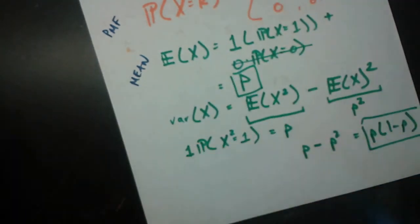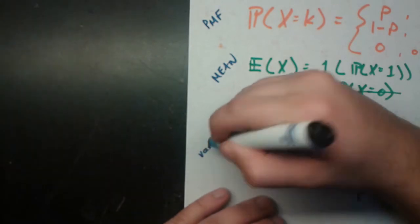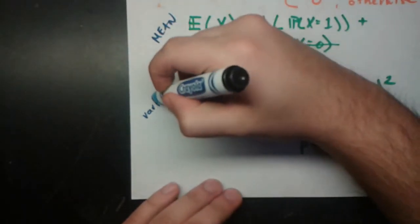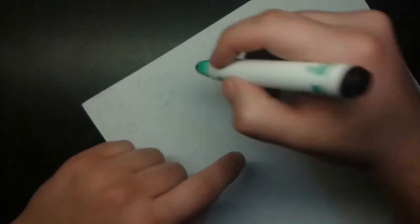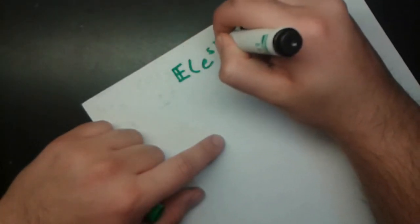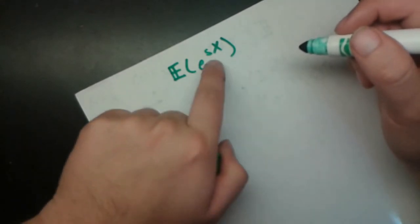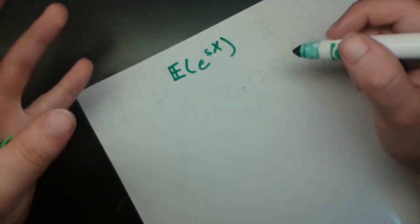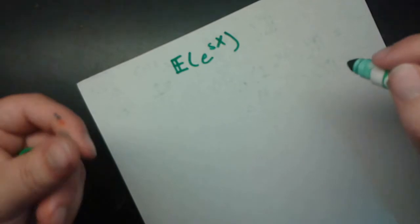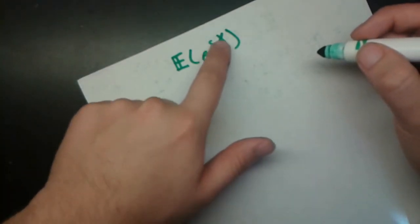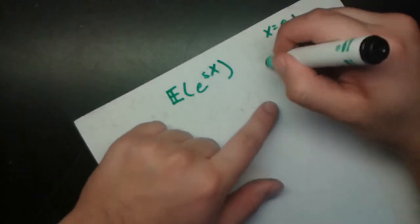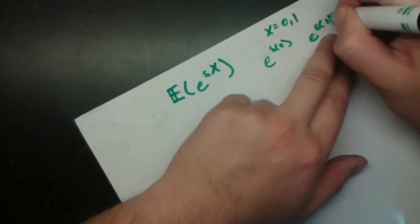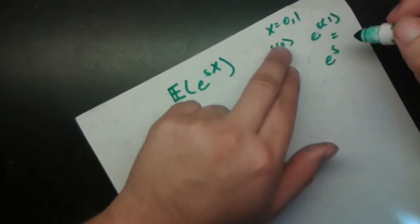So the variance of this Bernoulli random variable is p(1 minus p). Now the next thing we want to find is the moment generating function. The definition of the moment generating function is E[e^(sx)], where x is our Bernoulli random variable and s is some real number. Since x can either be 0 or 1, e^(sx) can either be e^(s·0) = 1, or e^(s·1) = e^s.